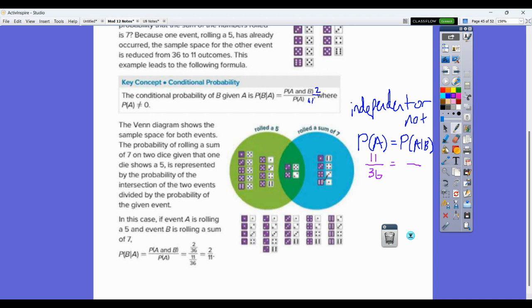Counting those outcomes, there's 6 of those. And A occurring in that case, there would only be two possibilities. So are these equal to each other? No. And so, therefore, these are not independent.